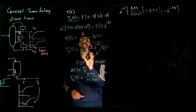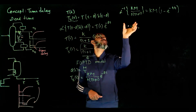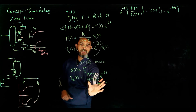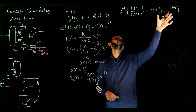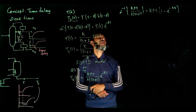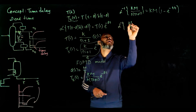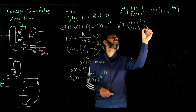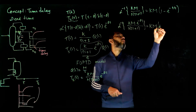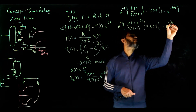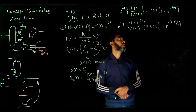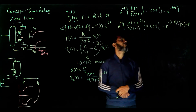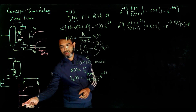So now if we take the inverse Laplace of T1(s) = K·M / [s(τs + 1)] times e^(−θs), we use the time-shift property: the result is the same expression but with t replaced by (t − θ). So the inverse Laplace gives K·M·(1 − e^(−(t−θ)/τ)), multiplied by a step function starting at θ. This represents that before time θ the function is zero — that is the inverse Laplace of the First Order Plus Time Delay model.